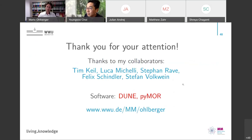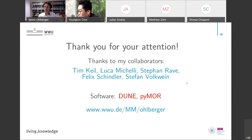Thank you so much for the great talk, Professor Ohlberger. We do have one question from the chat room from John Ragusa from Texas A&M: when generating full-order snapshots, one may have to use locally refined meshes — for example in phase-field simulations — and these locally refined grids will be different for each parameter. How can you apply the reduced basis method when snapshot vectors live in different spaces?